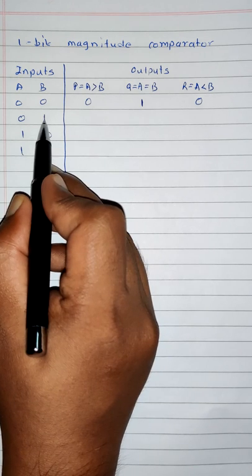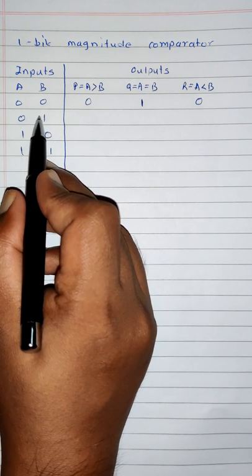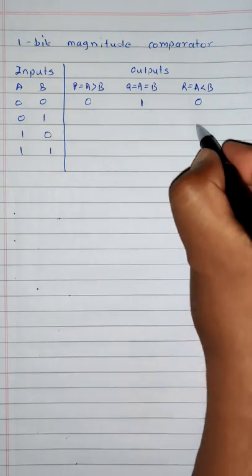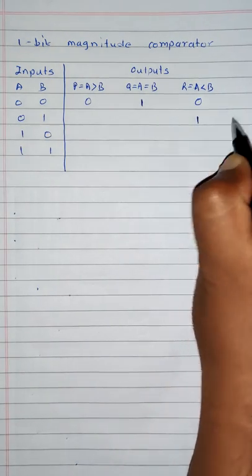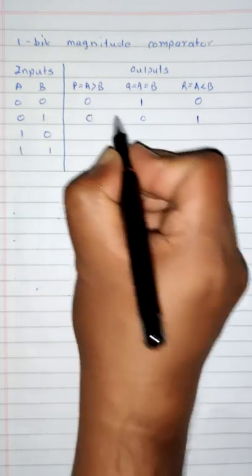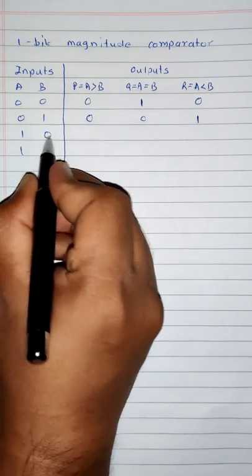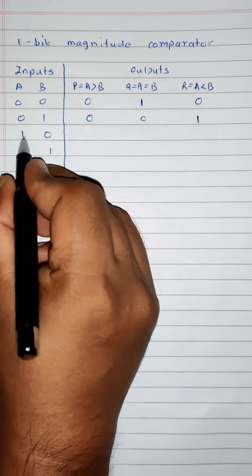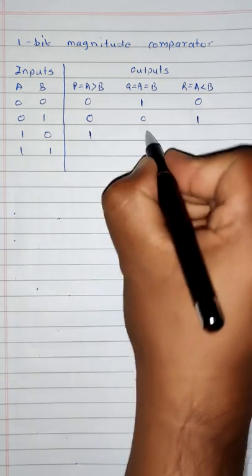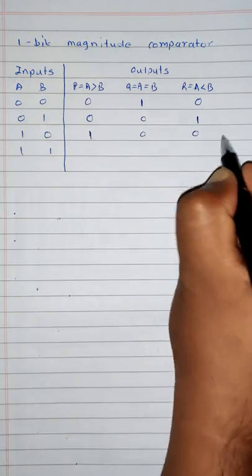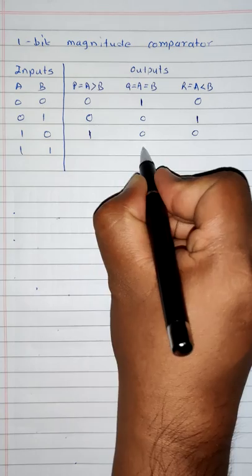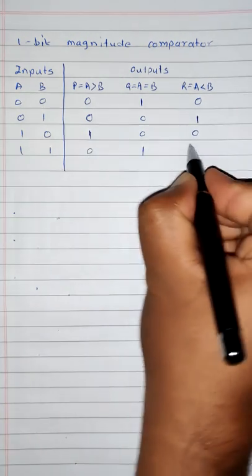If A is 0 and B is 1, that means A is less than B, so the R output will be 1 and remaining outputs will be 0. For A is 1 and B is 0, A is greater than B, so P output will be 1 and remaining are 0. And when A and B are both 1, A is equal to B, so Q is 1 and remaining are 0.